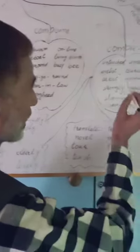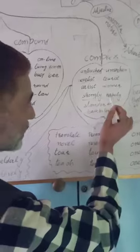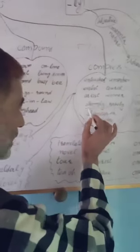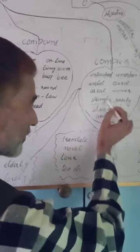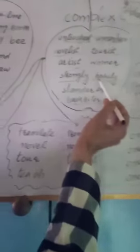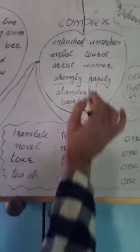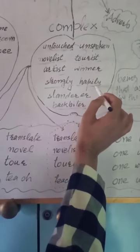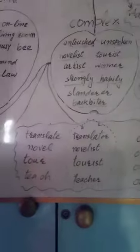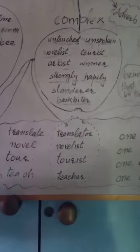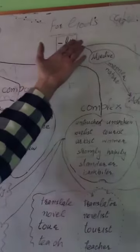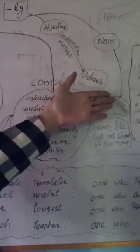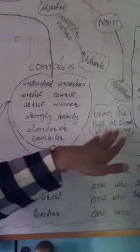For example: 'translate' plus '-or' becomes 'translator' — one who translates. 'Tour' plus '-ist' becomes 'tourist' — one who travels for pleasure. 'Novel' plus '-ist' becomes 'novelist' — one who authors novels. 'Teach' plus '-er' becomes 'teacher' — one who teaches. These suffixes are added to verbs and other words including verbs.